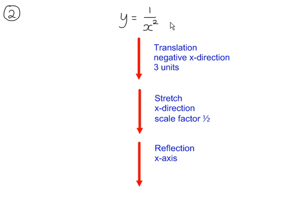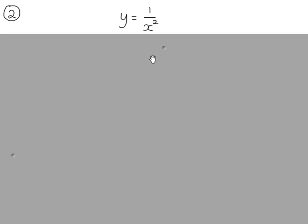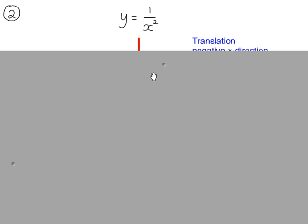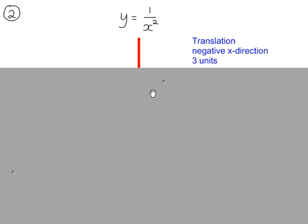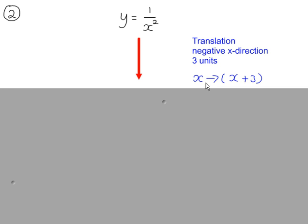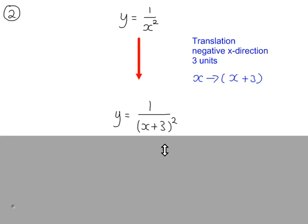Example 2 — we're going to apply these three transformations to y equals 1 over x squared. Starting with the translation in the negative x direction by 3 units. So we need to replace x in the original equation with x plus 3 to get this.